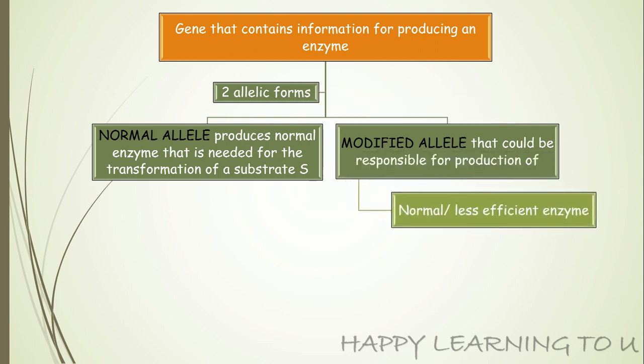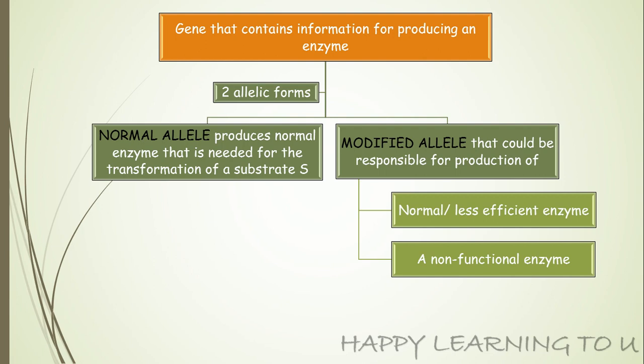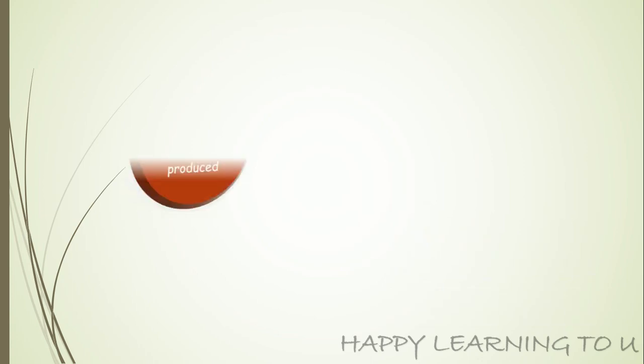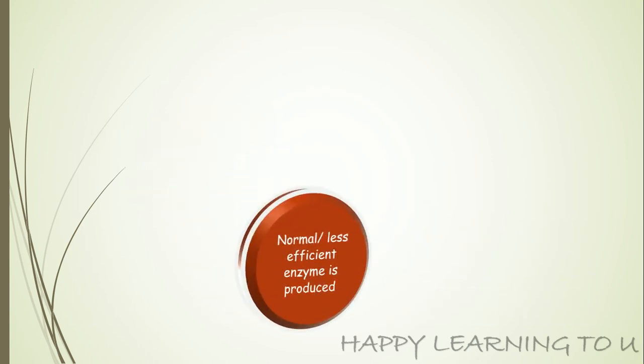This modified allele may be responsible for producing a less efficient enzyme, or it may produce a non-functional enzyme, or it may not produce an enzyme at all. So because of the modification of this allele, it may be responsible for producing any one type of enzyme.